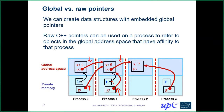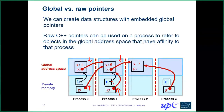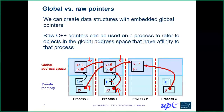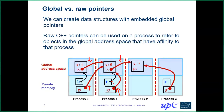On why global pointers are larger than normal pointers: you could imagine an implementation that reserves, say, 48 bits for the actual memory address and 16 bits for the process number, though you'd have to ensure the virtual address space fits into those 48 bits. Conceptually speaking, regardless of implementation, a global pointer is a combination of a local memory address and an affinity.